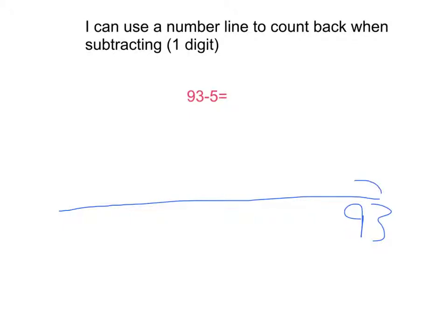You take 1 each time. So 93 take 1 is 92. 92 take 1 is 91.